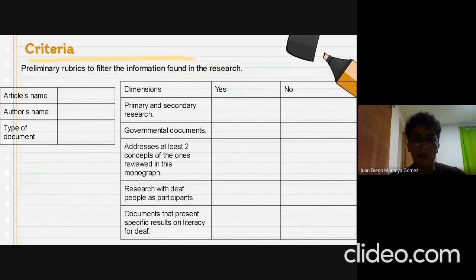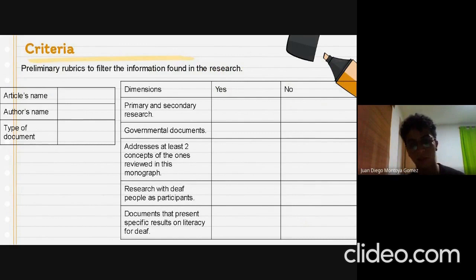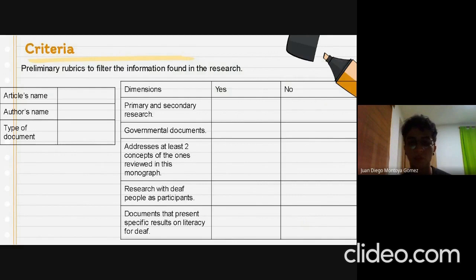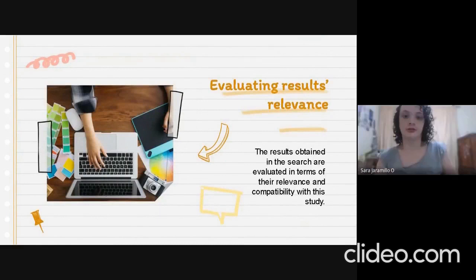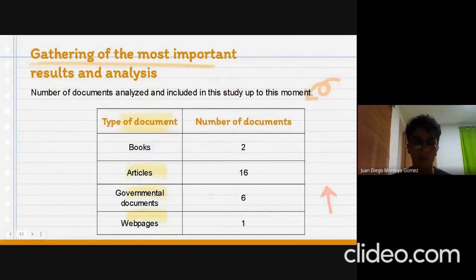For the criteria, we created a rubric which contains five dimensions to filter the documents from the databases and journals. The first dimension is that the document should be a primary or secondary research; it could be a governmental document; it should address at least two concepts reviewed in this monograph; it will have research with people as participants; and it will present specific results on literacy for deaf students. Once we obtain the results, they are going to be evaluated in terms of relevance and compatibility with this study. Here you can see the number of sources we have analyzed so far — among them, books, articles, governmental documents, and web pages.